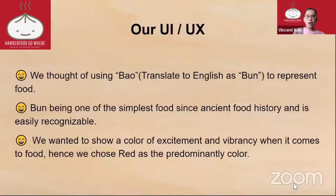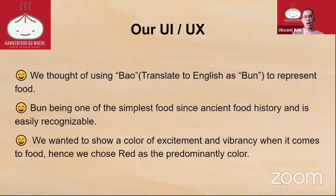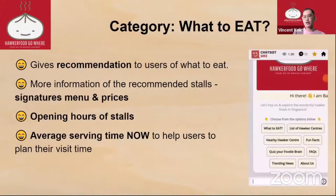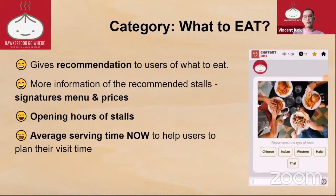For our UI, we thought of using 'Pao' — a bun — because it's the simplest Singaporean food, it's recognizable, and it has history. We wanted to show a color of excitement because when we think about food we are very excited — it's the most relaxed time when you can eat and talk. That's why we chose red as our color.